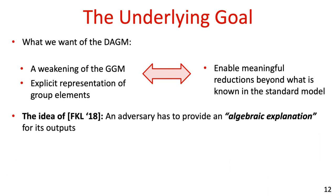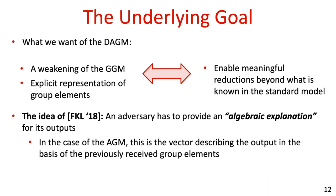The way in which Fuchsbauer et al. achieve these goals in their algebraic group model is by requiring that the adversary provides an algebraic explanation for how it computes its output. In the case of the AGM, this explanation is a vector describing how the output group elements are computed from previously received group elements. An important property of this algebraic explanation is that it is extractable from generic algorithms, and hence the model induced by requiring this explanation is less restrictive than the generic group model.